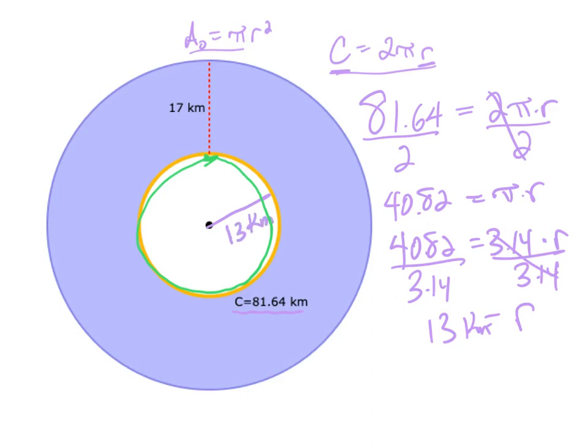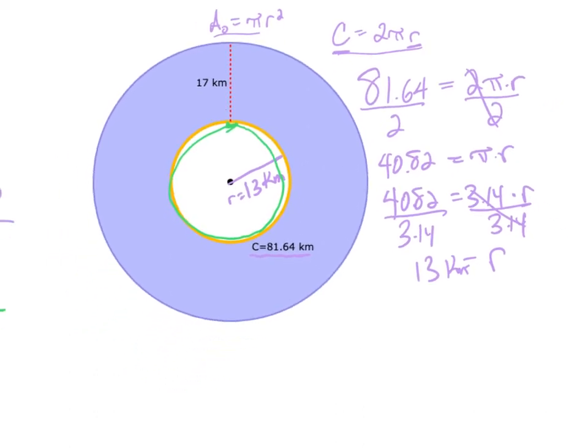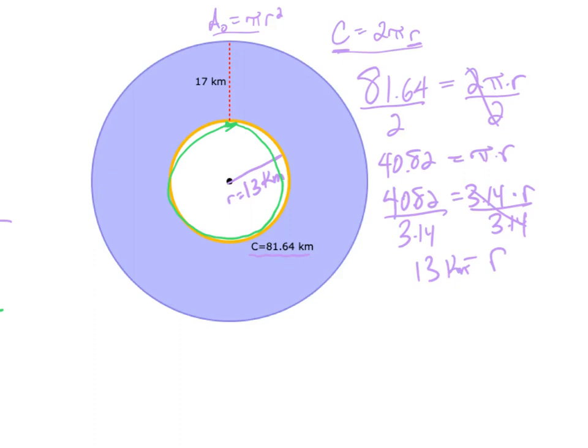So I know my radius. Now to figure out the big circle radius, I've got to add this outside measure of 17. So 13 plus 17 is 30 kilometers. Again, I'm going to just figure out the area in terms of pi. And that's going to be my final answer.